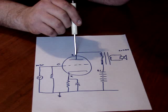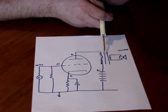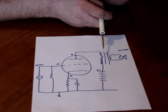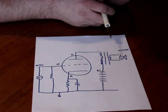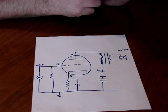This is the plate or anode. Now we've added the transformer, the output transformer. Most tube equipment has an output transformer. There are some exceptions to that rule, but we won't get into that.